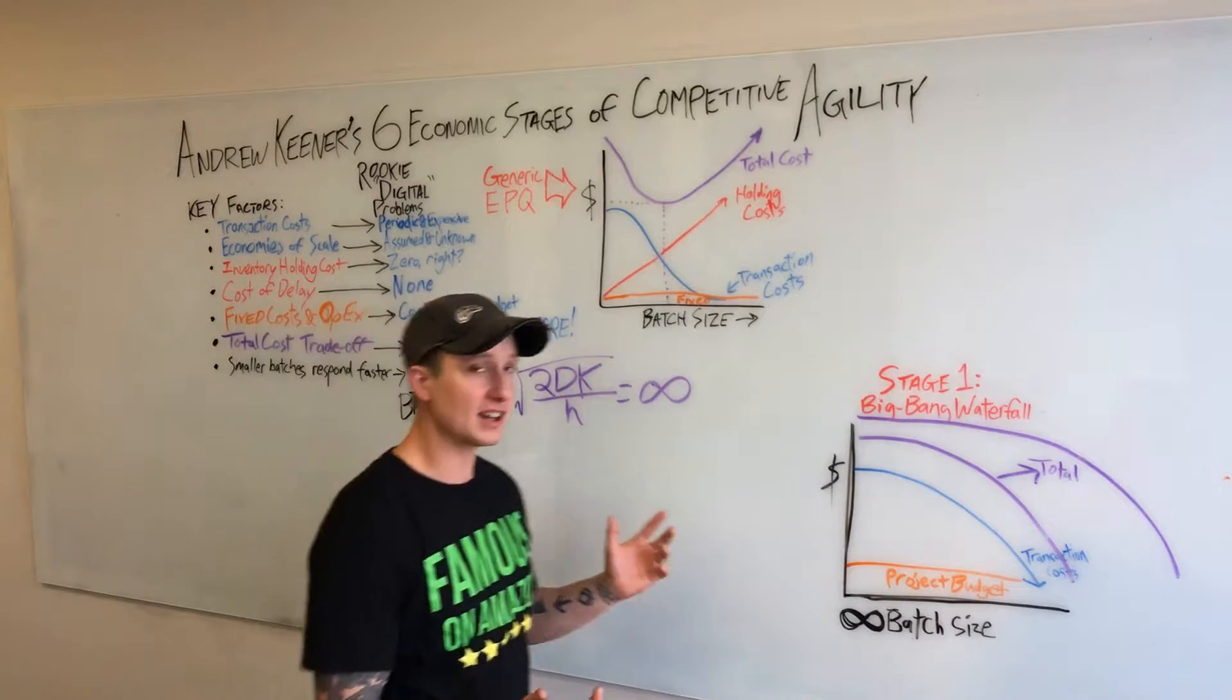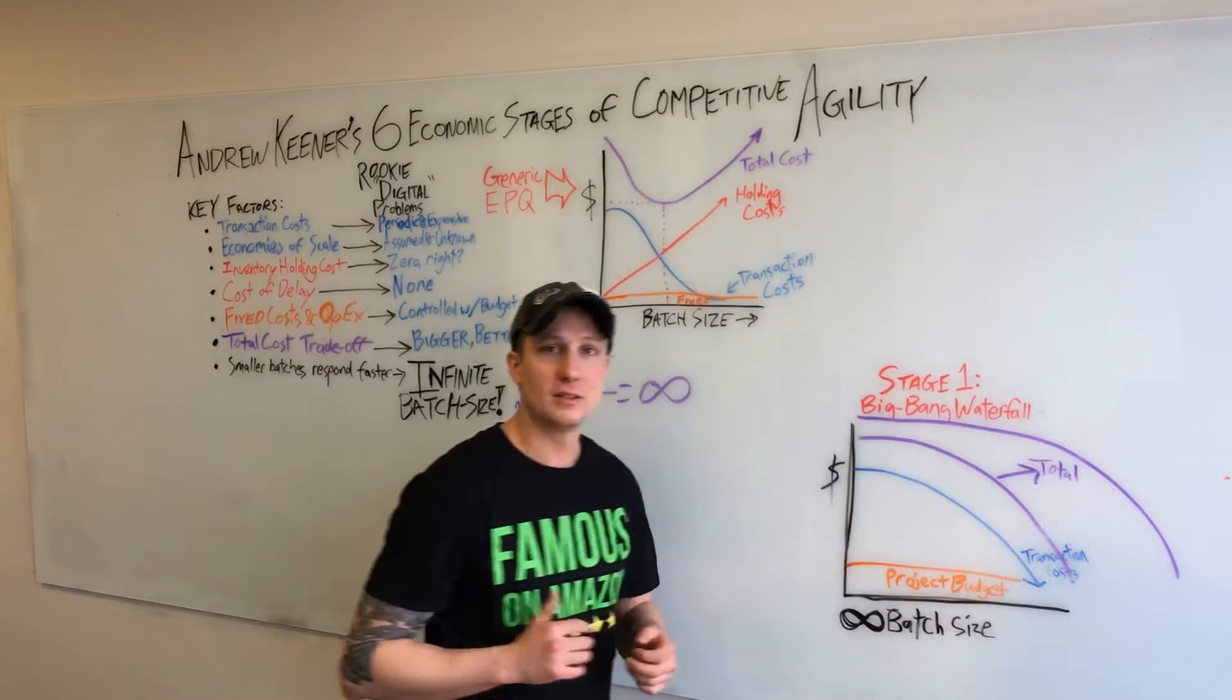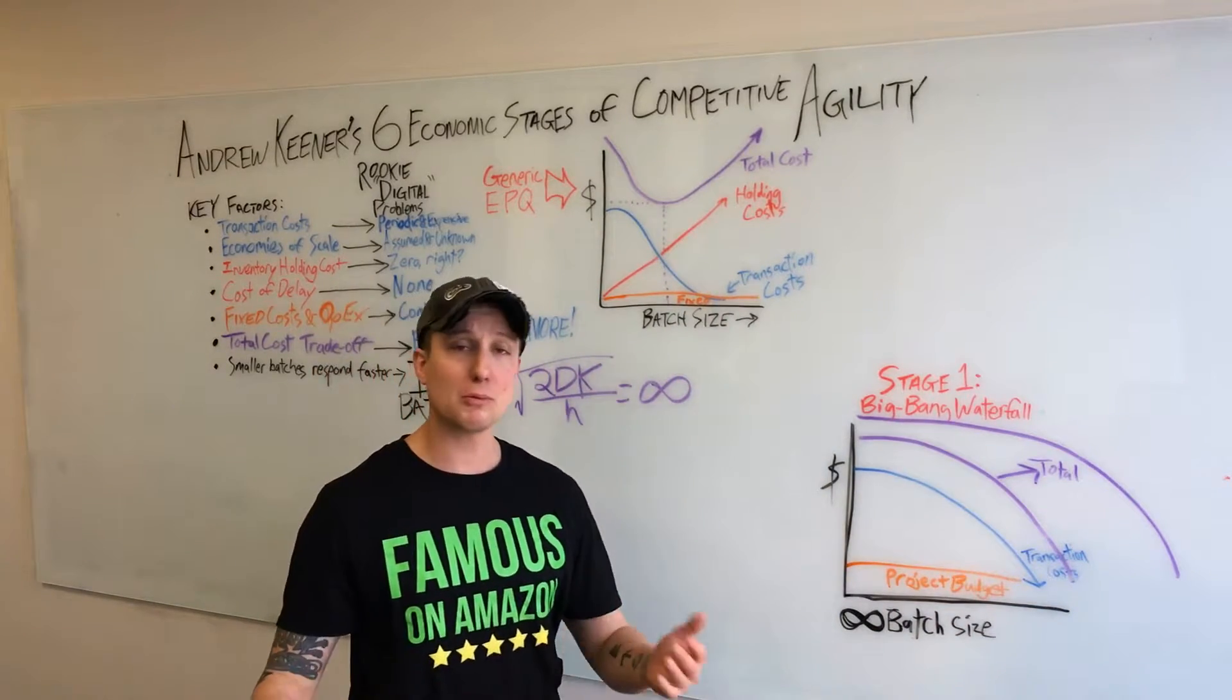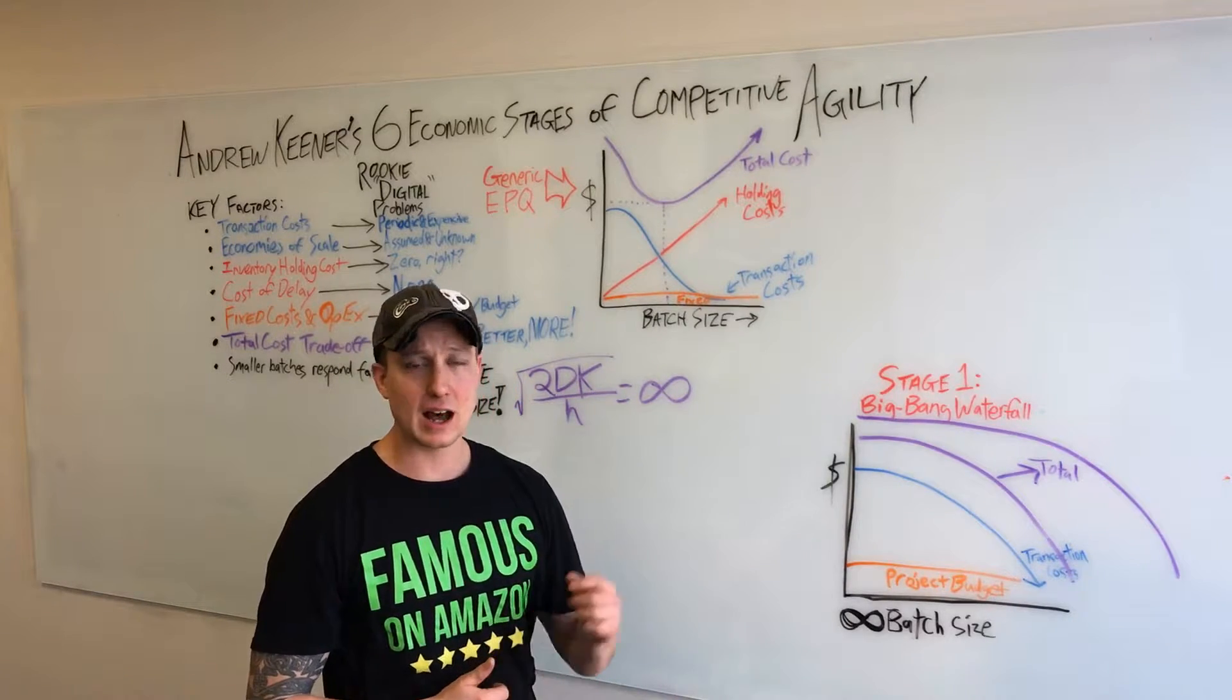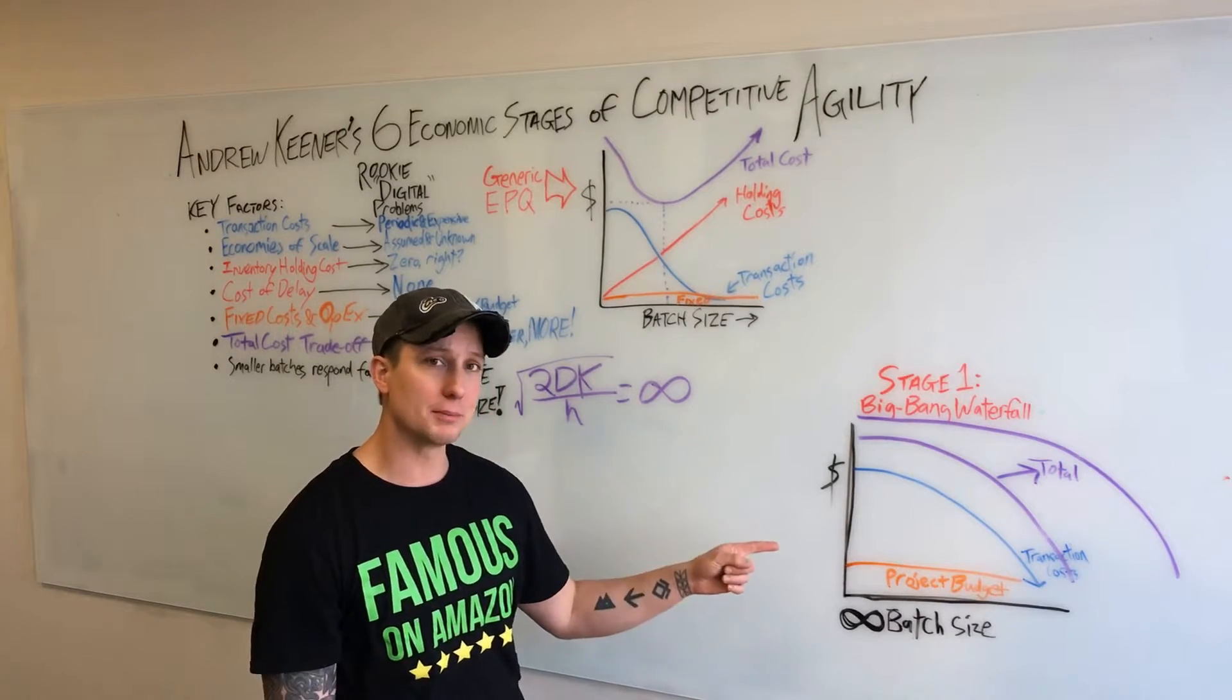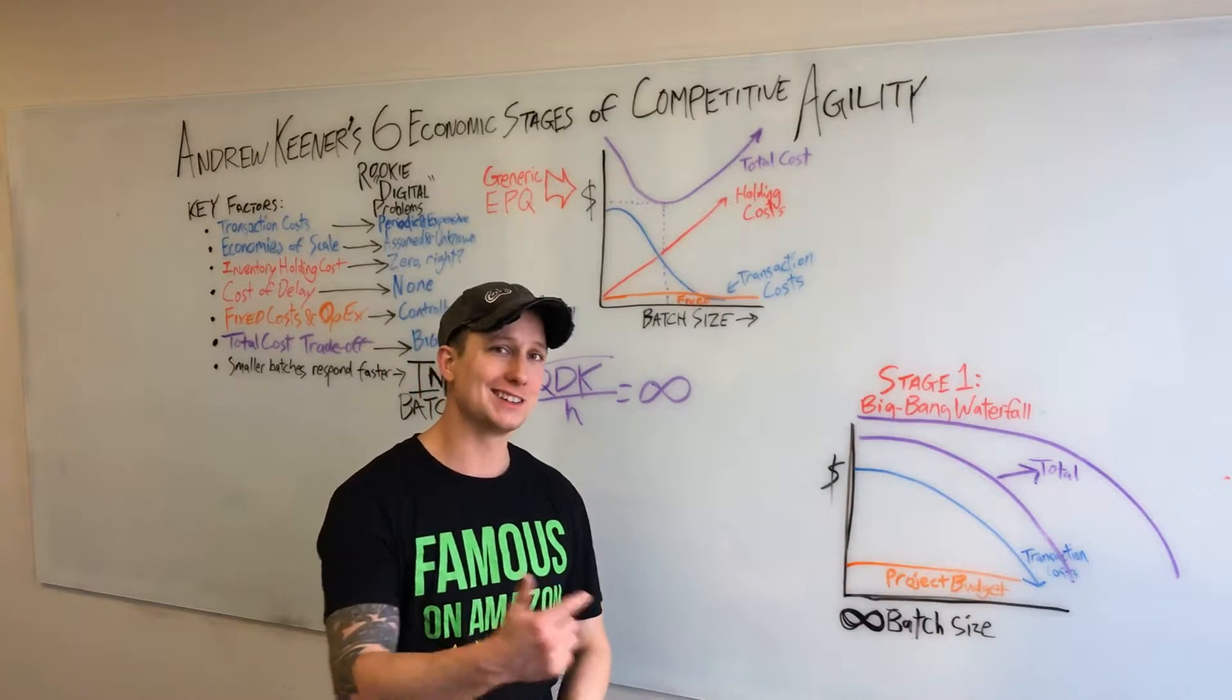Now infinite batch size means that we're going to continue to grow the total cost curve no matter what. As long as I've got the power to convince you that it's important, I can justify that the cheapest way to build it is to do it all at once, one function at a time.